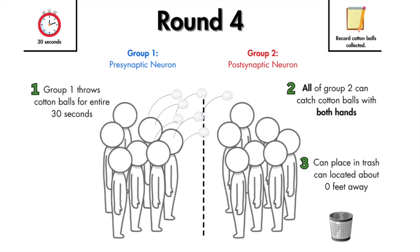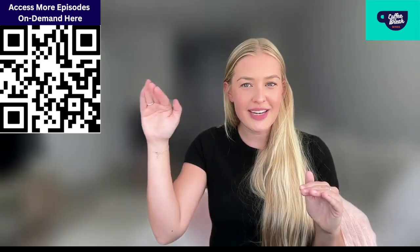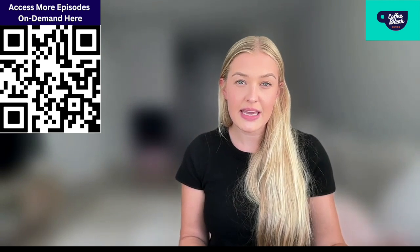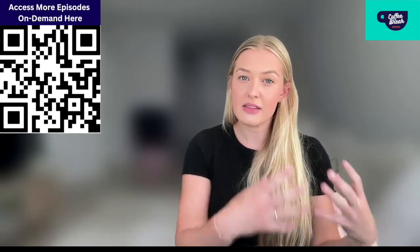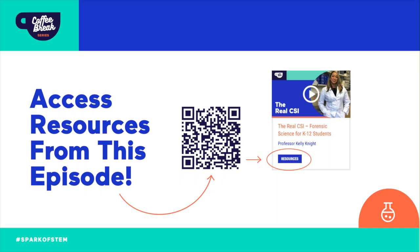In the fourth and final round, all post-synaptic students can catch with both hands and the trash can is right next to them. You should see a clear trend of increasing cotton balls caught. This is where you discuss with students: why did electrical signaling get faster? Why did chemical signaling get stronger? These are the same mechanisms in our brain — when we do something with repetition and practice, electrical and chemical signaling both begin to strengthen.